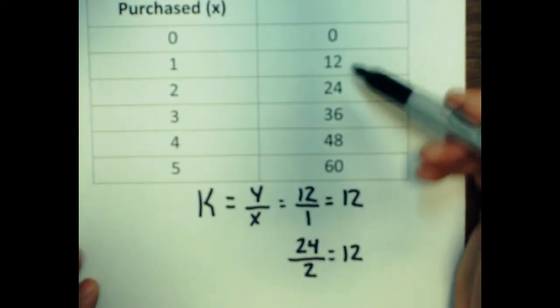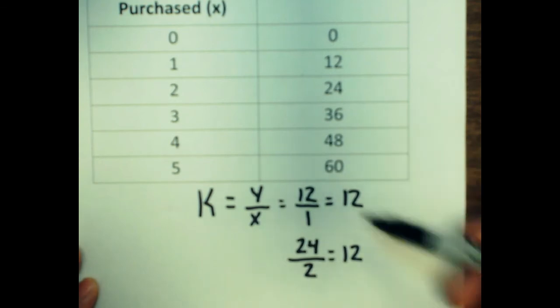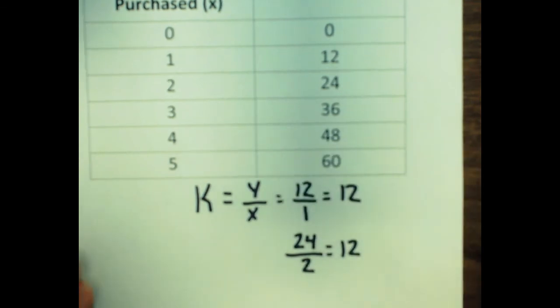We want to be able to do that with every ordered pair in the table. And if we get 12 for all of the ordered pairs, we know that this is a proportional relationship.